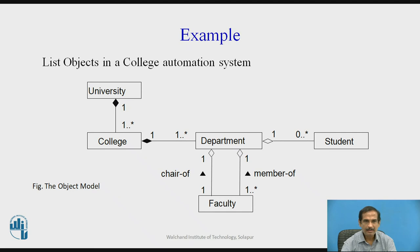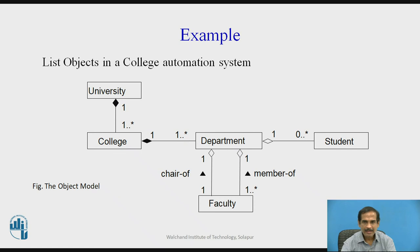As an example, let us look at the listing of objects in a college automation system. The objects involved are university, college, department, student, and faculty. We have roles expressed with numbers, aggregations expressed as diamonds, and associations expressed as arrows. If we do not place a particular arrow on the association, it still means the association is bi-directional.